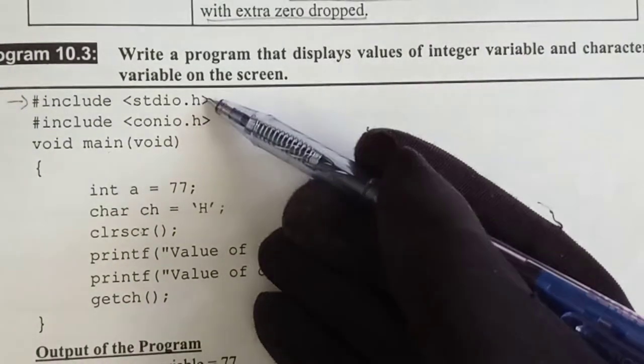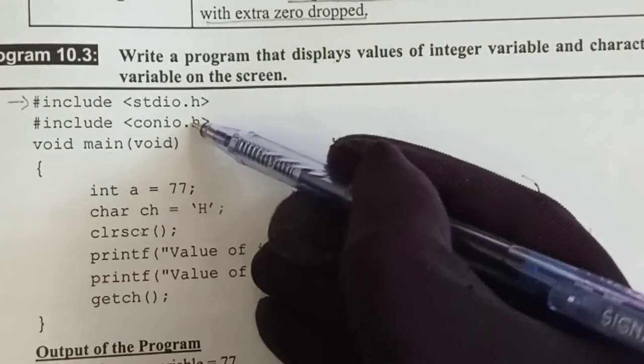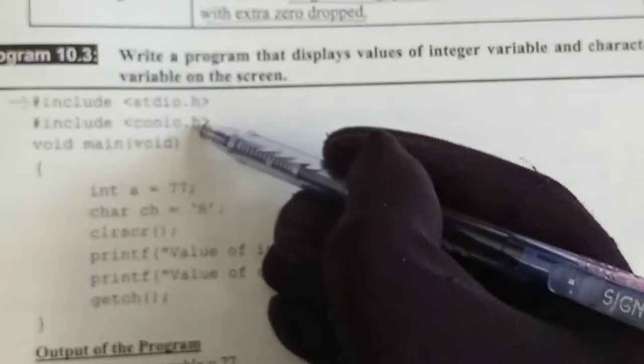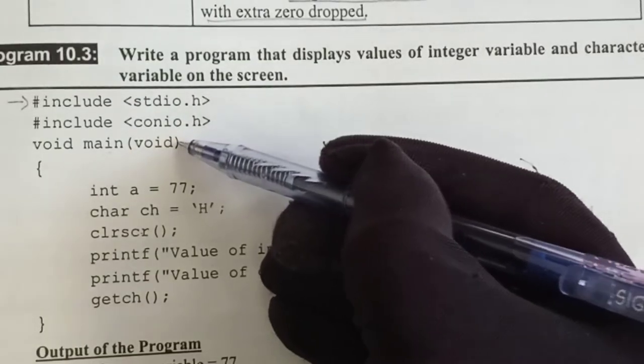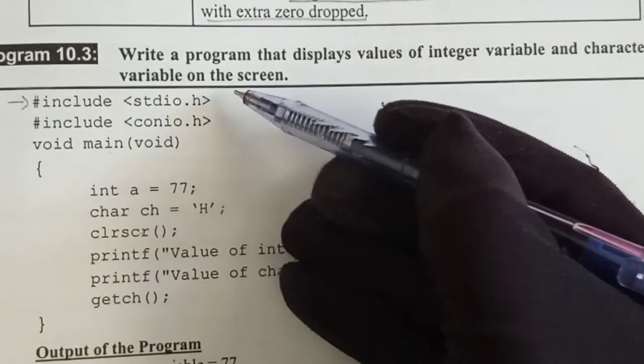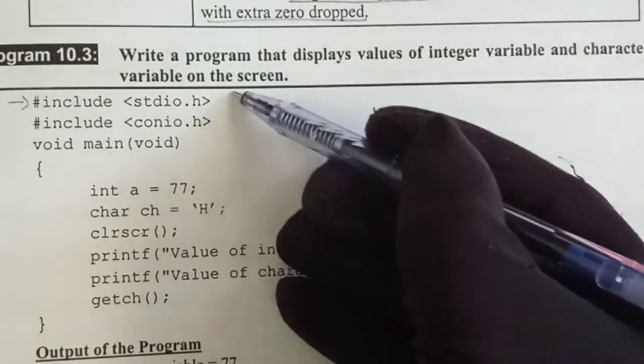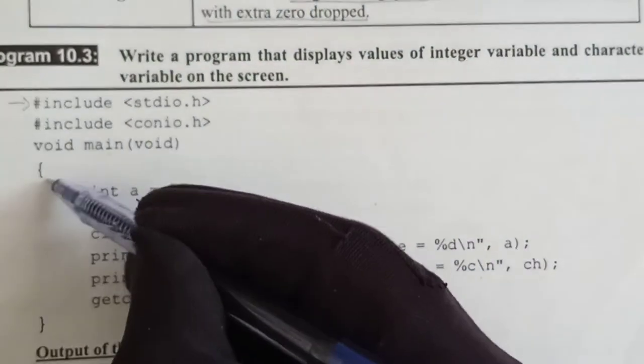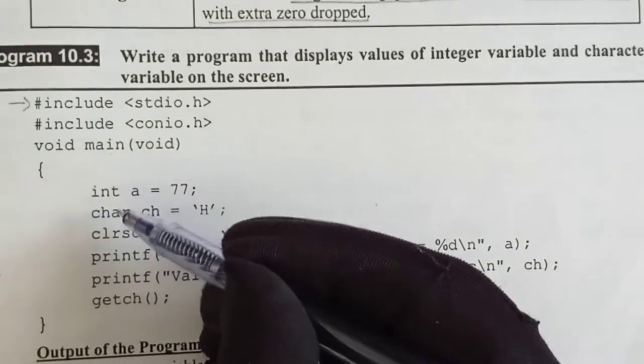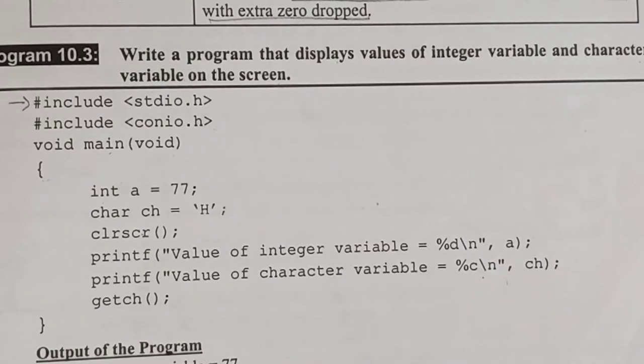First we have header file stdio.h and conio.h. You don't need to use conio.h, but if you do it's good. Then void main void. You know that when we start any program, we have to write these header files as it is. Then curly brackets are delimiters and from here our program body starts.